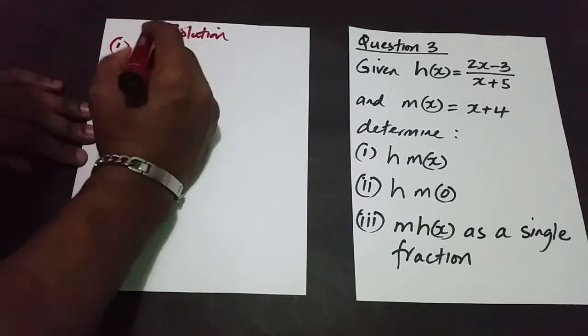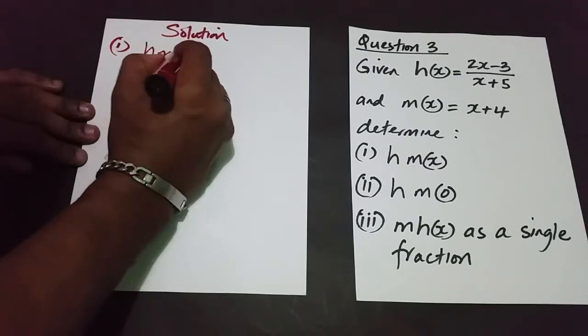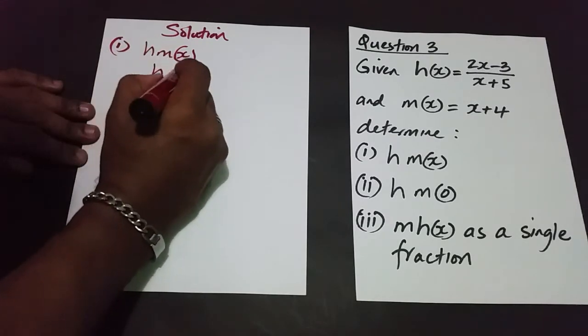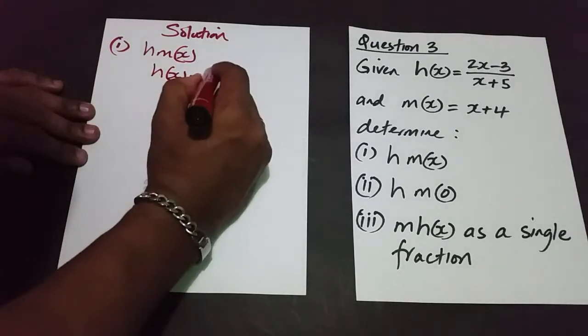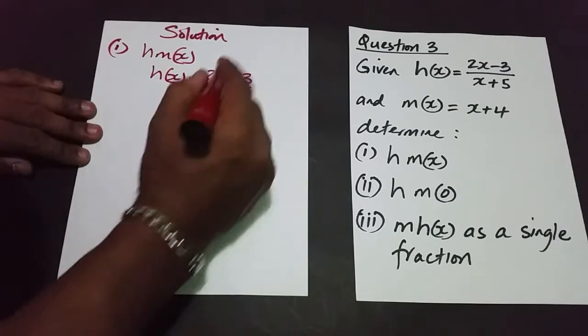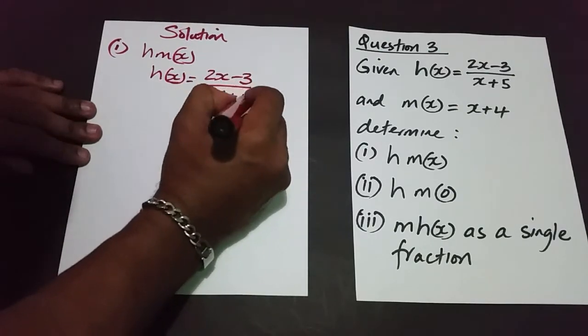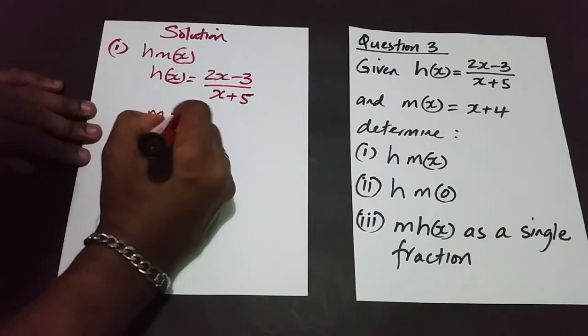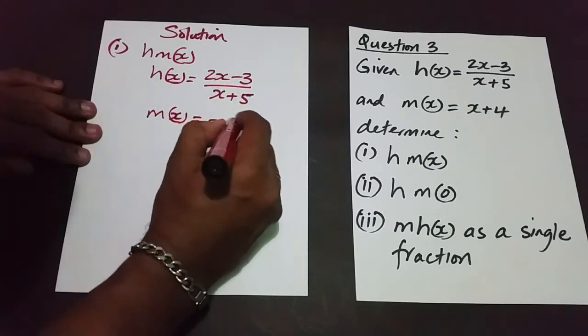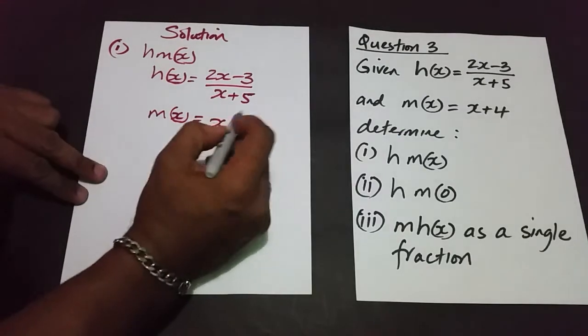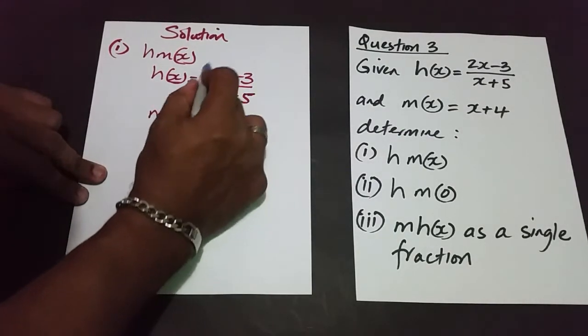So we're finding h of m of x. Now clearly h(x) here would operate as the mother kangaroo, which is 2x minus 3 divided by x plus 5, and the baby kangaroo is clearly m(x) which is equal to x plus 4. So again, the baby kangaroo here is going to be jumping in.